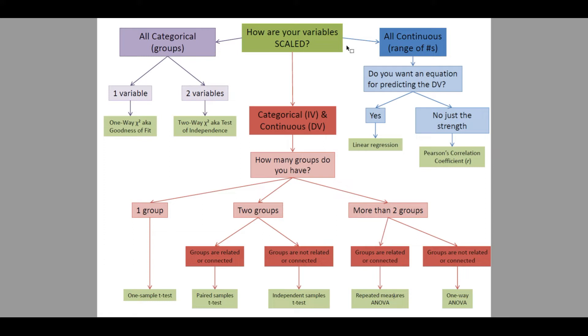Both of those variables, number of toppings and price, are a range of numbers. They're a continuously scaled variable. So, in that case, we would want to determine, well, do we want an equation that allows us to predict our outcome, our dependent variable? If so, then we'll use a linear regression analysis.